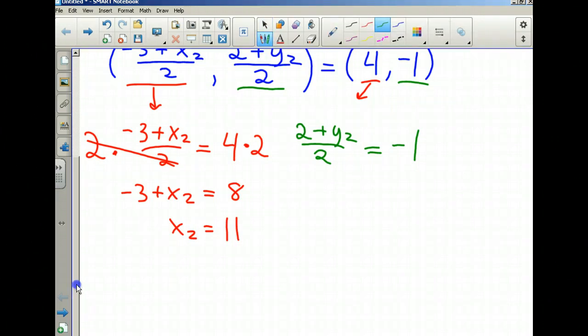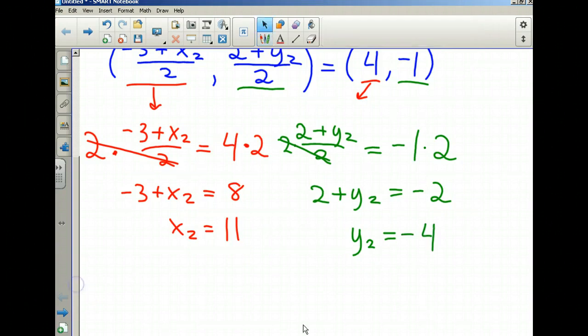For the y-coordinate, I also multiply both sides by 2 to cancel that out, giving me 2 + y₂ = -2. Now we subtract 2 from both sides, and I get that y₂ equals -4.